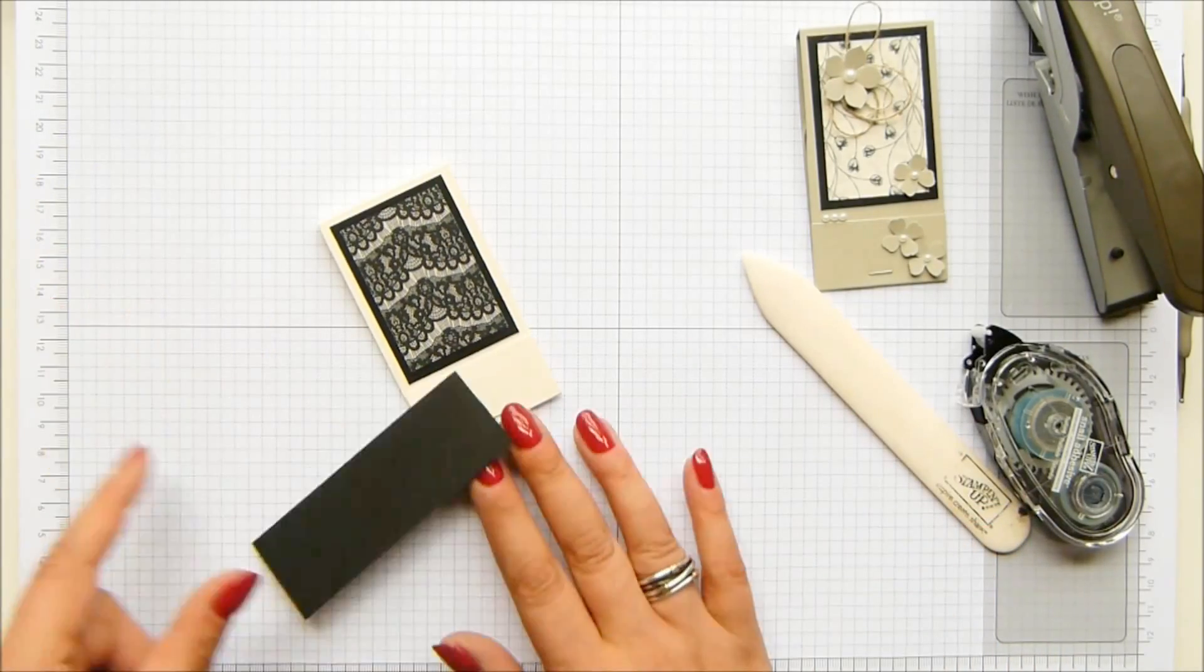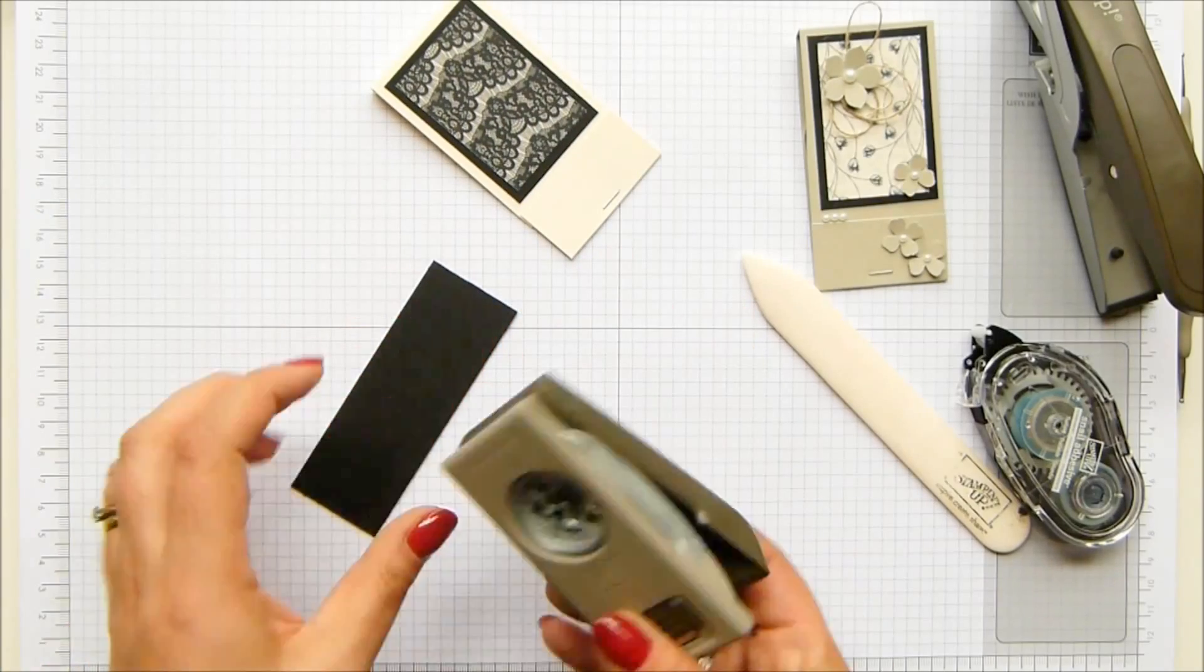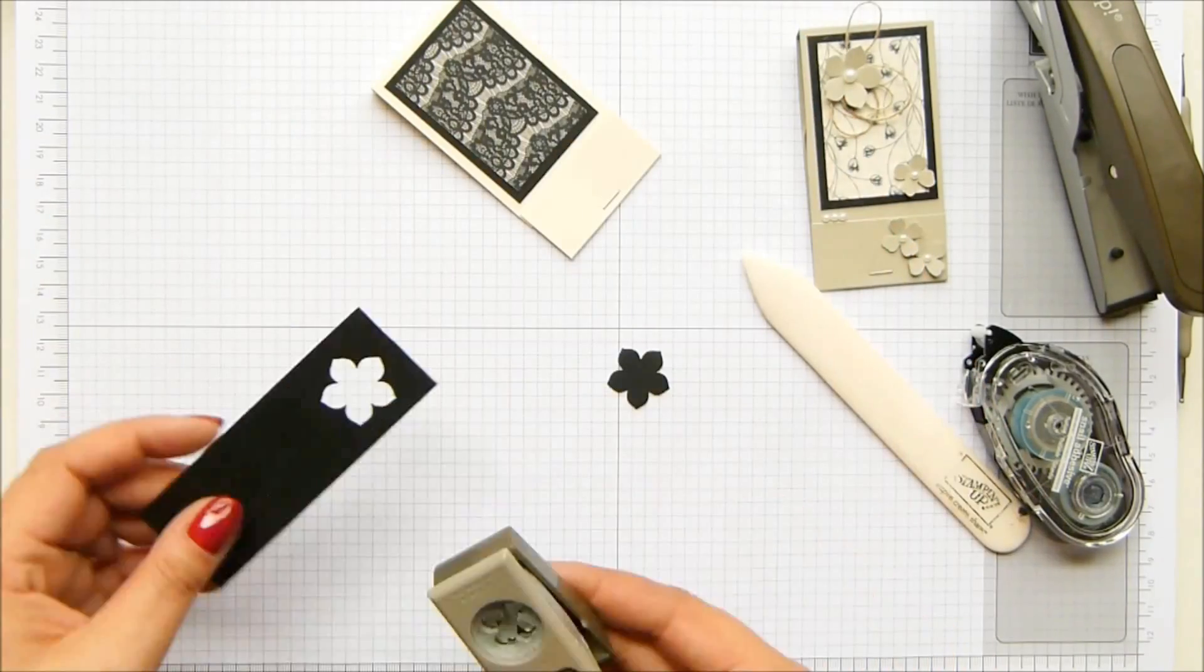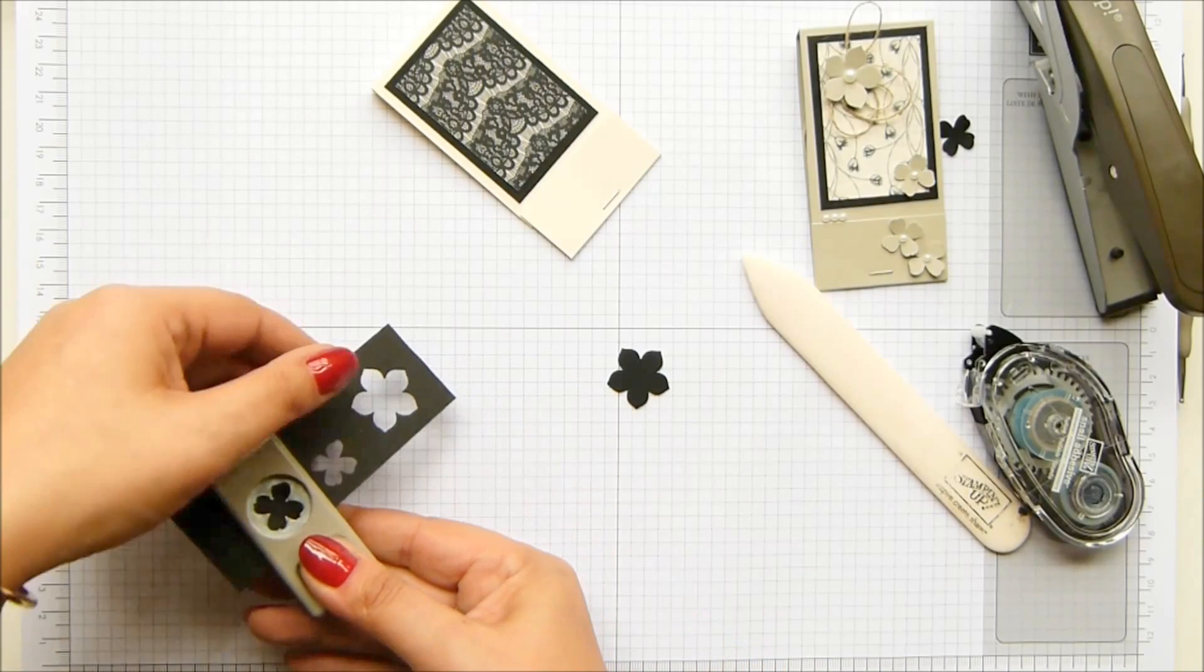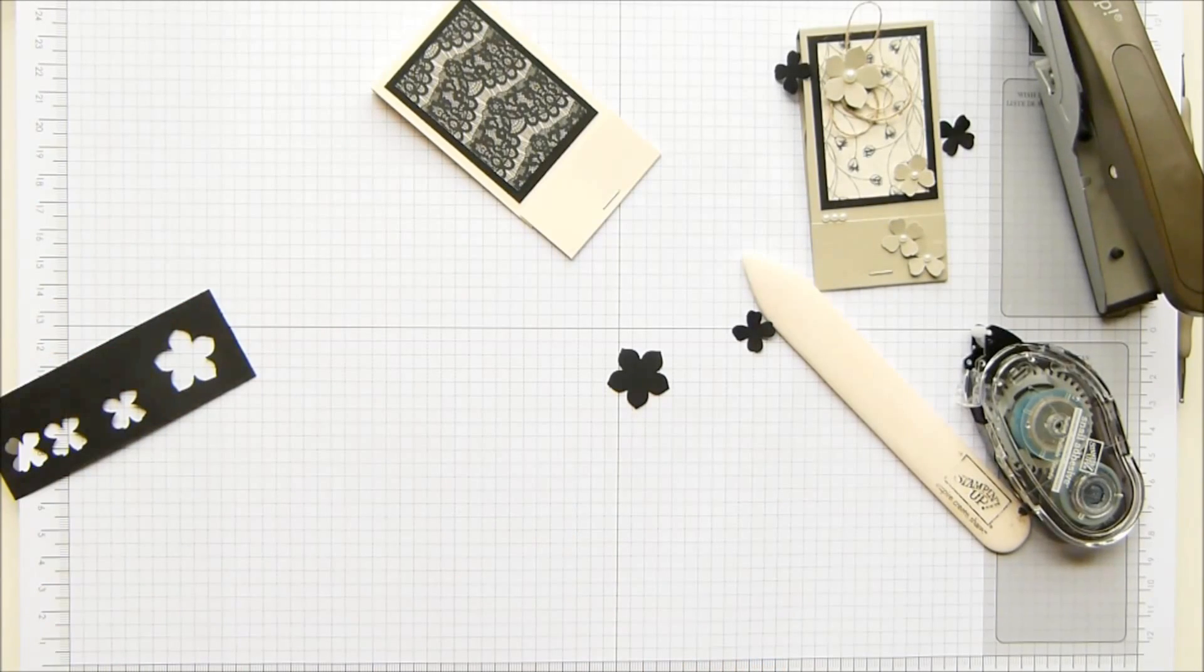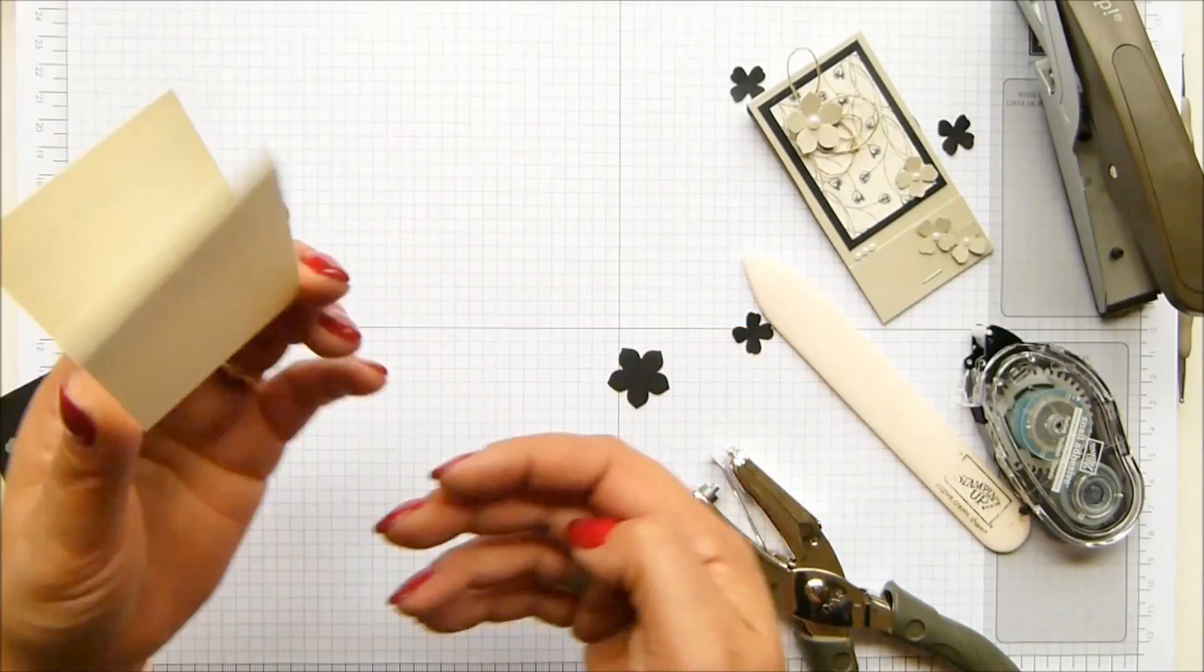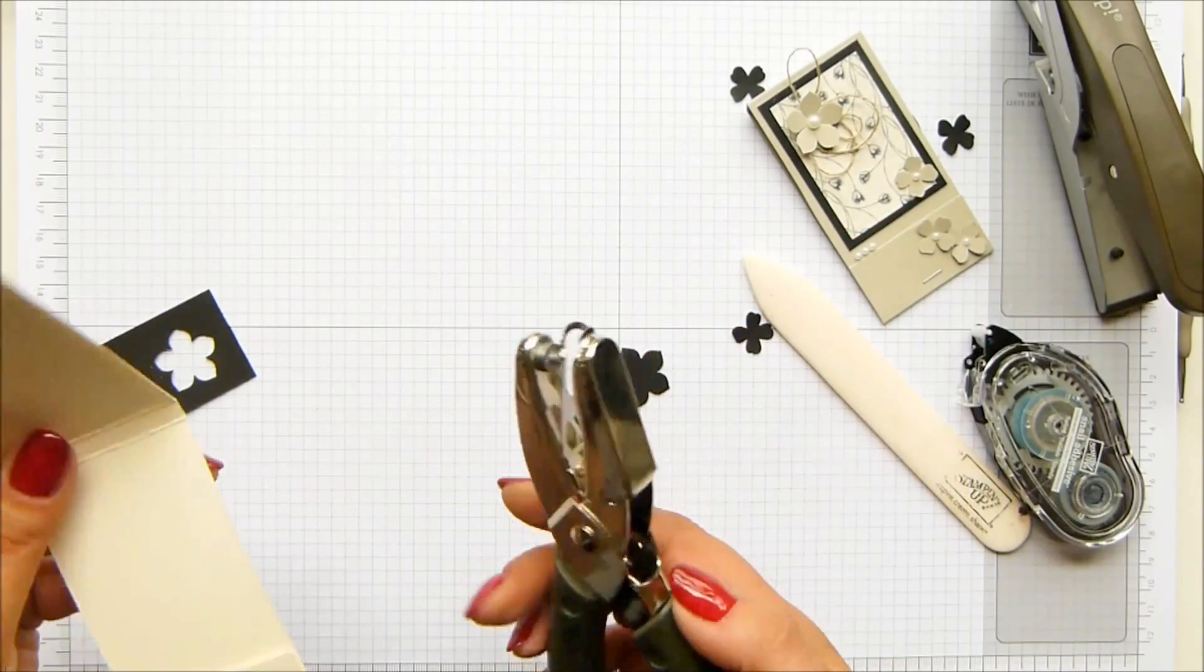So basic black cardstock, petite petals punch, and then the itty bitty accents punch. And I've just realised I forgot to get my handheld, my other handheld punch out. Let me see if I can reach it. It's okay, I've got it here. Because obviously I wanted to put some loops, some holes in the back. So this is the middle one. This is one eighth of an inch.